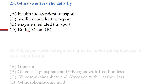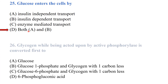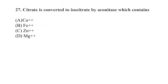Glycogen, when acted upon by active phosphorylase, is converted first to glucose-1-phosphate, then to glucose-6-phosphate, which can be further converted to free glucose.